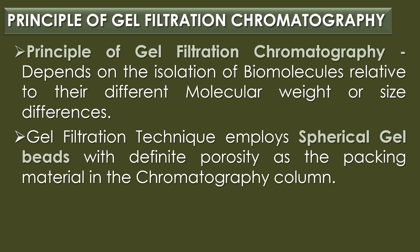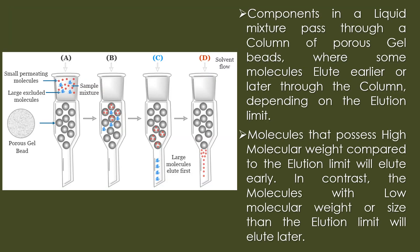The principle of gel filtration chromatography depends on the isolation of biomolecules relative to different molecular weight or size differences. The technique employs spherical gel beads with definite porosity as the packing material in the column. Components in a liquid mixture pass through the column of porous gel beads, where some molecules elute earlier or later depending on the elution limit. Molecules with high molecular weight elute early, while those with low molecular weight elute later.